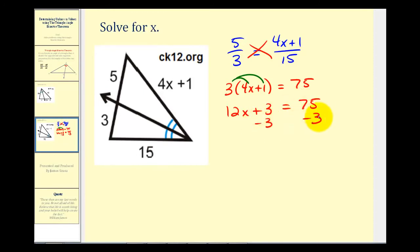Subtract 3 on both sides. 12X equals 72. Divide both sides by 12. So we have X equals 72 divided by 12. That would be 6.